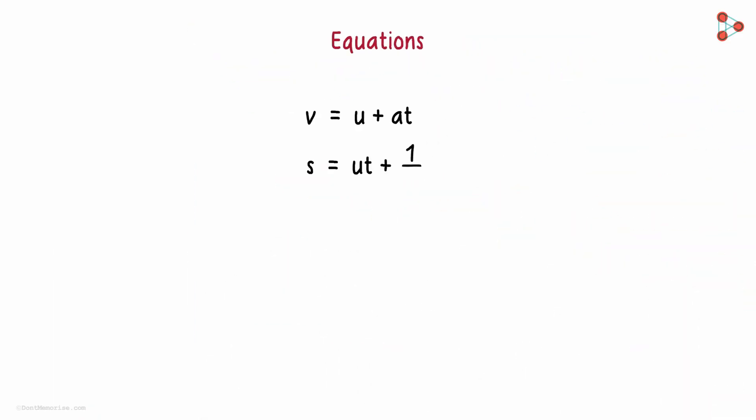These are three important equations we come across in physics when we learn about motion. V is equal to U plus AT. S is equal to UT plus one half AT squared. 2AS is equal to V squared minus U squared.